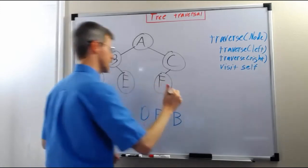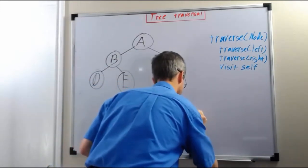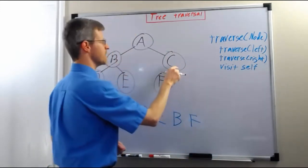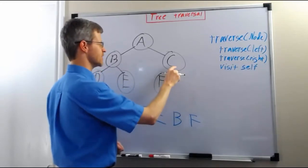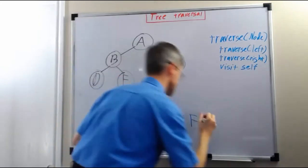We can't traverse left, we can't traverse right. So we visit F, and then we come back up to C. We've been to the left, now we try to go to the right, we can't do that, so then we visit C itself.